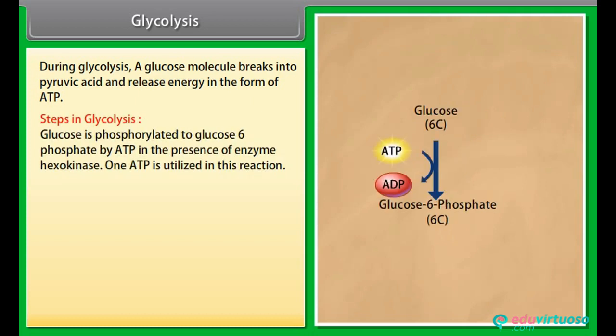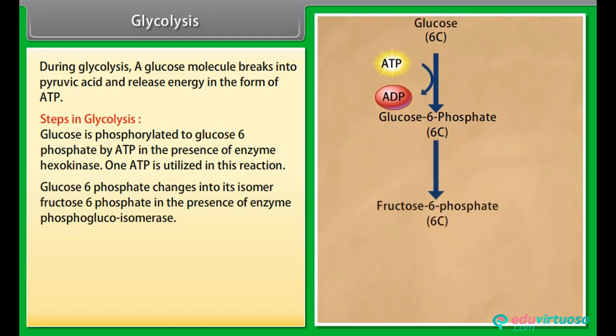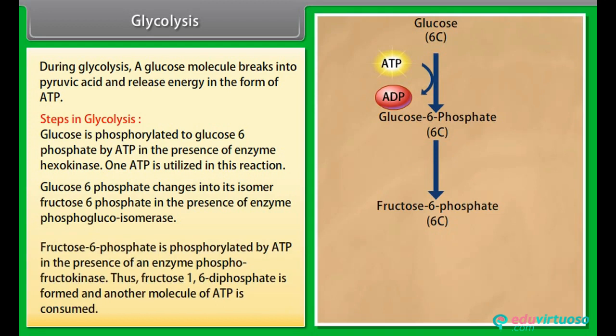Glucose is phosphorylated to glucose-6-phosphate by ATP in the presence of enzyme hexokinase. One ATP is utilized in this reaction. Glucose-6-phosphate changes into its isomer fructose-6-phosphate in the presence of enzyme phosphoglucoisomerase. Fructose-6-phosphate is phosphorylated by ATP in the presence of enzyme phosphofructokinase.